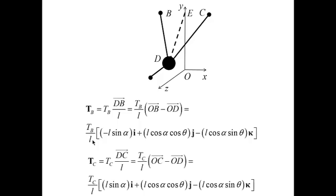I proceed in the same manner for the force dc. In this case, I deal with the vector dc, calculated as OC, c is the terminal point, minus OD, d is the origin, and both vectors have been calculated, and if I put them together, I obtain this expression for tc.